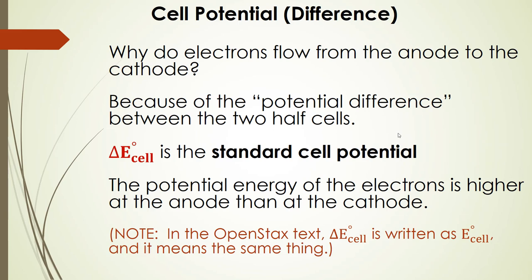The last thing we need to talk about here is the cell potential or the potential difference. Why do electrons flow from the anode to the cathode? It's because of this potential difference between these two half cells. Remember, we have to keep them physically separated in space. This potential difference is represented with ΔE°cell. You also might see it as E°cell without the delta. They mean the same thing. That's the standard cell potential. The potential energy of the electrons is higher at the anode than at the cathode, so they're less stable. They flow from the higher energy anode to the lower energy cathode.